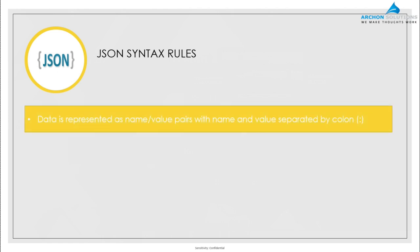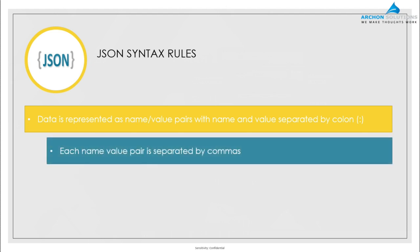There are some rules for writing JSON syntax. Rule one: data is written in name-value pairs, and the name and value are separated using a colon. Rule two: each name-value pair is separated by commas, because when transmitting data from one source to another, you typically want to pass more than one value, and these are separated using commas.